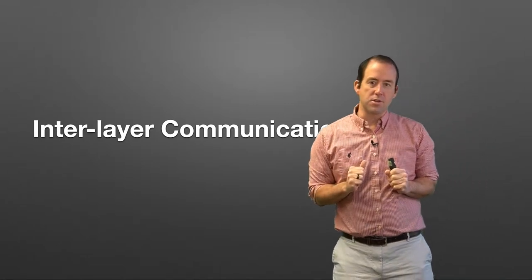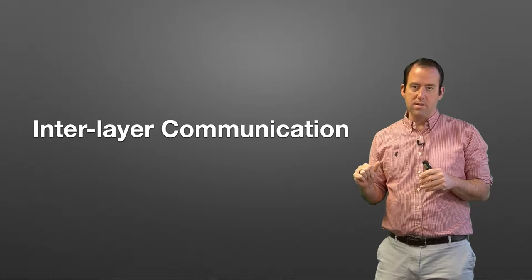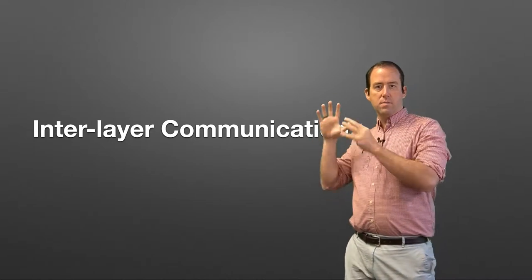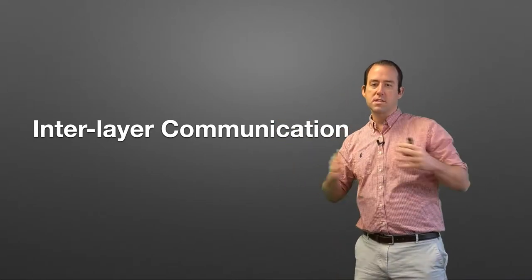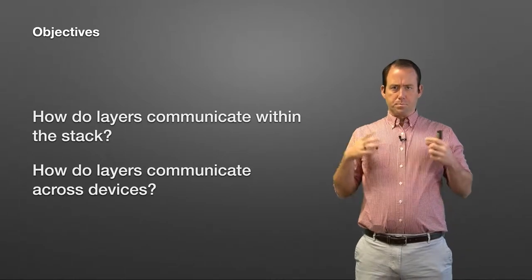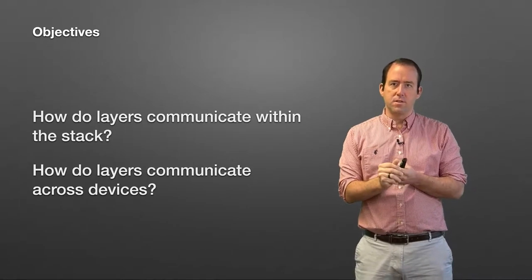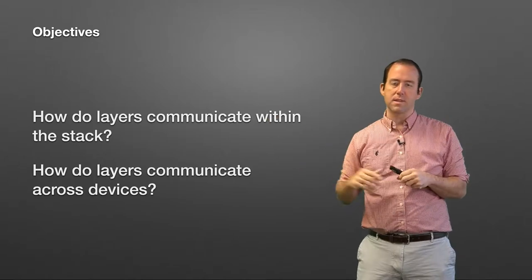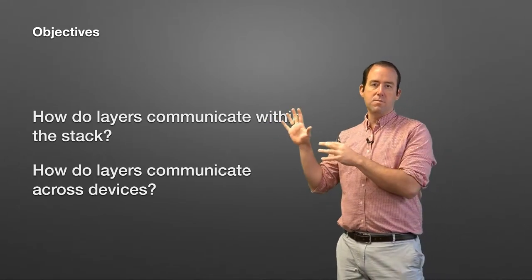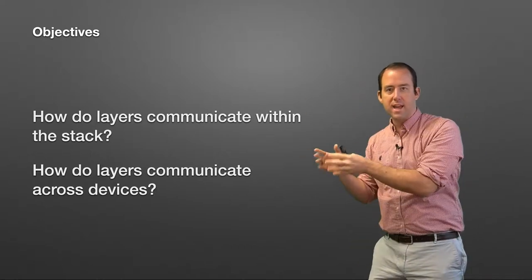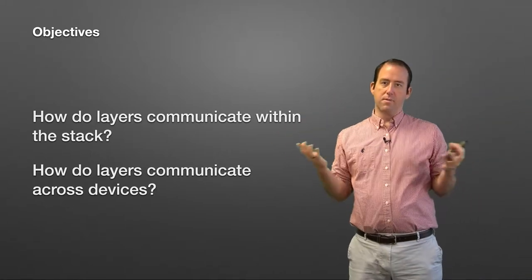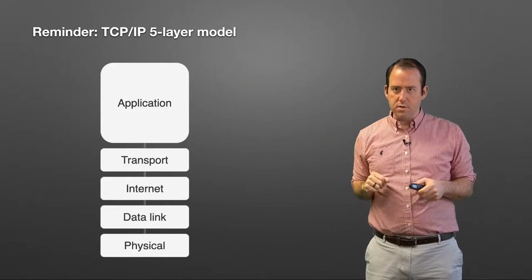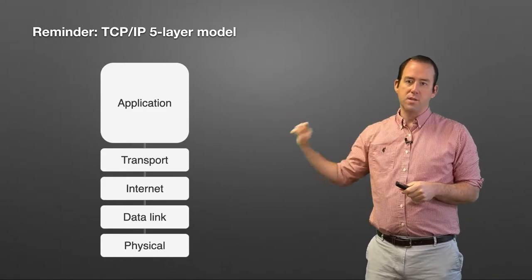Let's talk about interlayer communication. We've talked about the TCP/IP model and the OSI model, how the layers are stacked on top of each other. Now let's talk about how communication happens when messages are being sent and received across a network. We're talking about the five-layer TCP/IP model: application, transport, internet, data link, and physical.